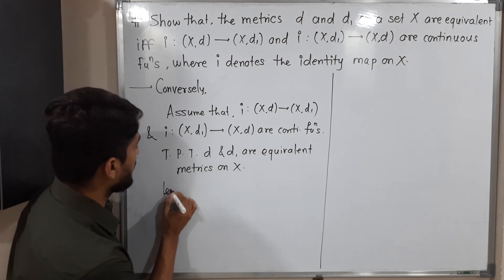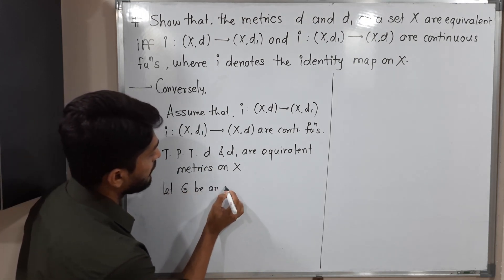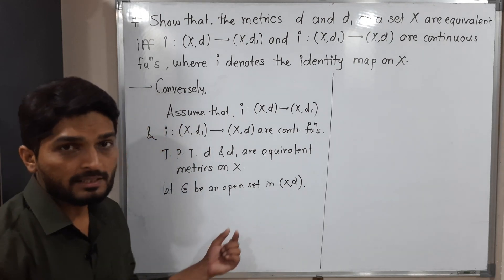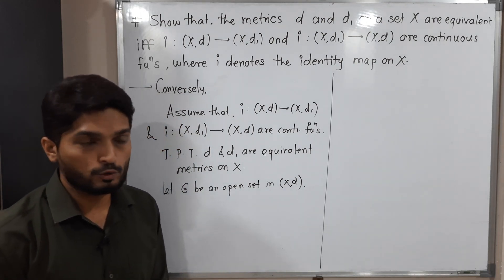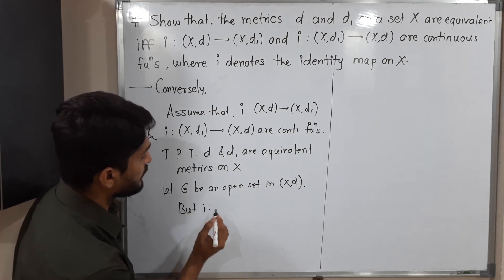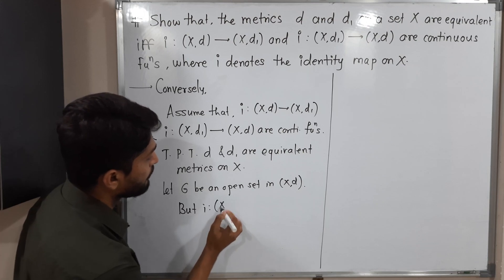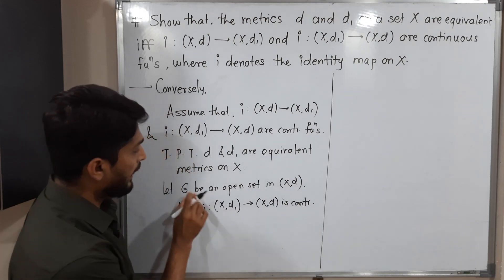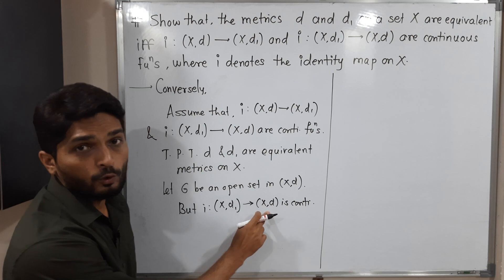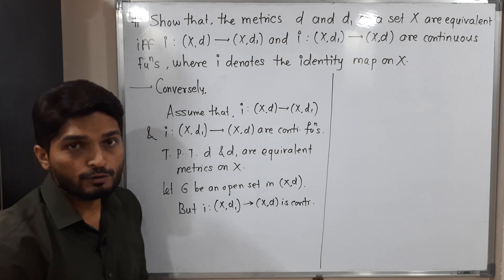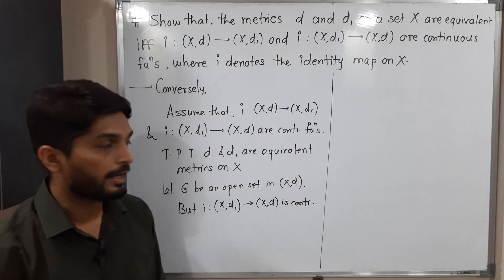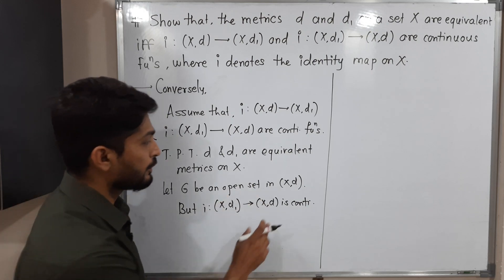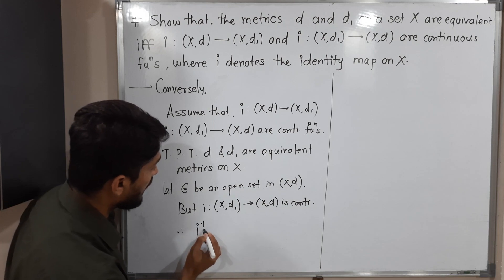Let G be an open set in (X,d). We have to prove it is also open in (X,d1). We use our assumption that i from (X,d1) to (X,d) is continuous. Since G is open in (X,d), it is open in the codomain of this function, and by continuity, the inverse image i⁻¹(G) is open in the domain (X,d1).